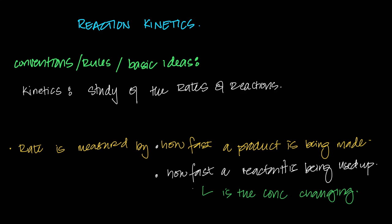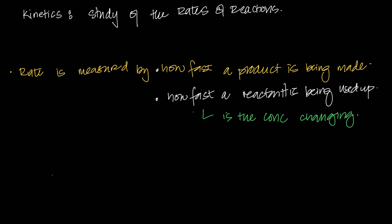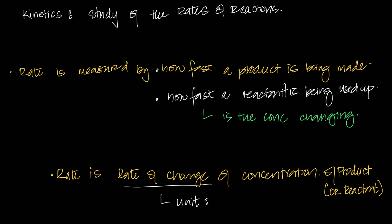By technical definition, the rate of a reaction is the rate of change of concentration — either the concentration of a product or a reactant. We technically want it for product, but it's easier to measure for reactant in the real world. The unit for rate is moles per dm³ per second — that's something you have to remember.